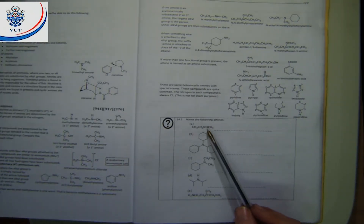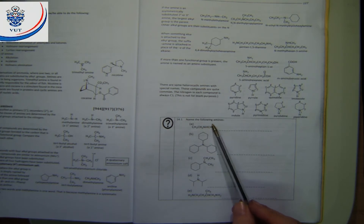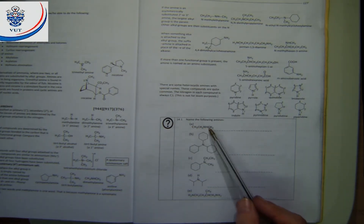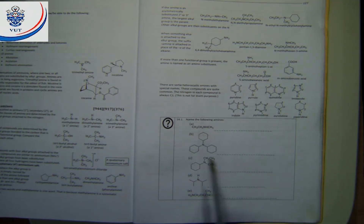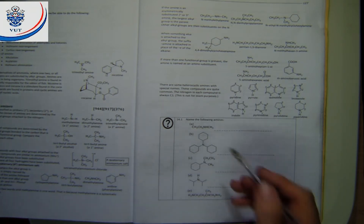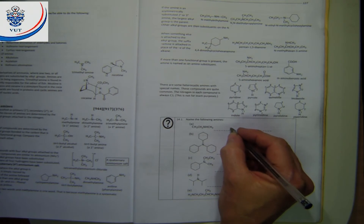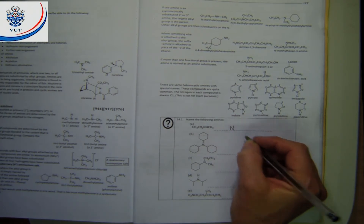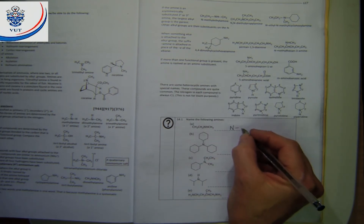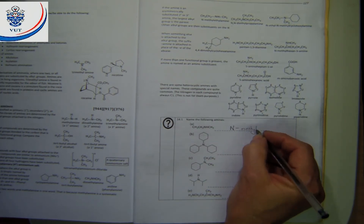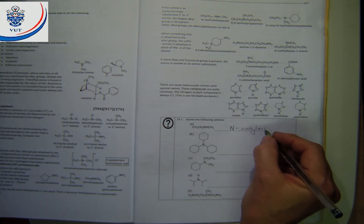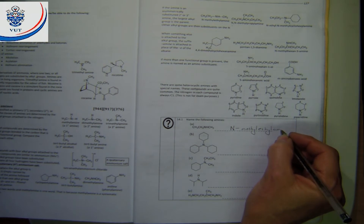Let's try some exercises. We have an amine group — the NH — with a methyl group and an ethyl group attached. It's not symmetric. Because it's not symmetric we have to decide which is the parent chain. The ethyl has two carbons and the methyl has only one, so the parent will be the ethyl side. The methyl is a substituent on the nitrogen. So you start with N, state the methyl group, then the parent part: N-methylethylamine.